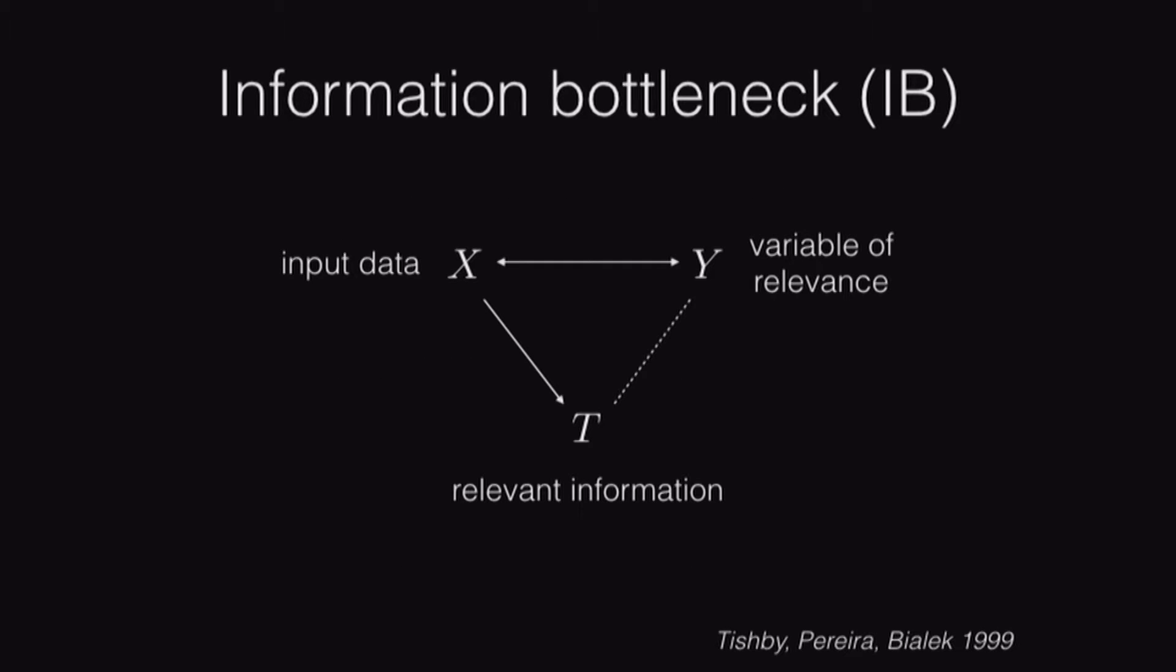The problem we've been working on is known as the information bottleneck problem. In this setting, we have some input data X, and we wish to extract the relevant information T that it has about some other variable of interest Y. To do so, we have access to the joint distribution of X and Y, so some statistical information about the relationship between X and Y, and we seek a possibly stochastic mapping from X to T.